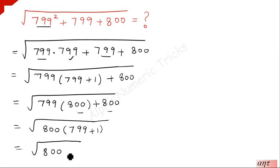799 + 1 is 800, so we have √(800²). The square and square root cancel, and the answer is 800.